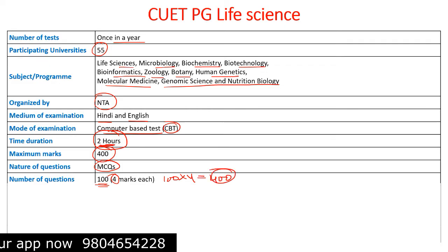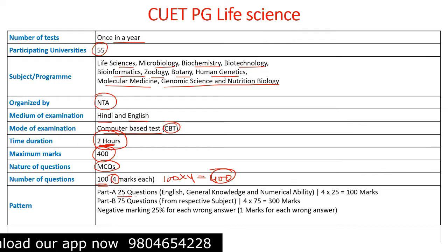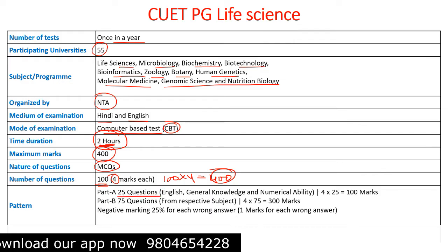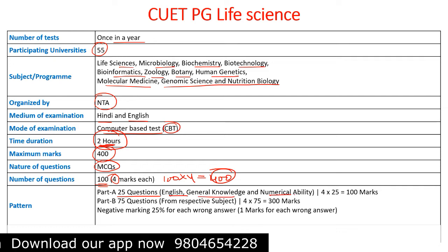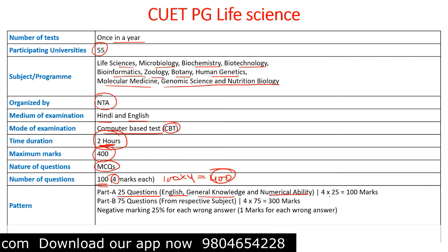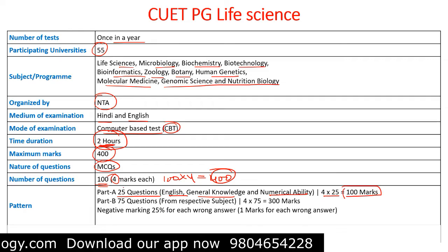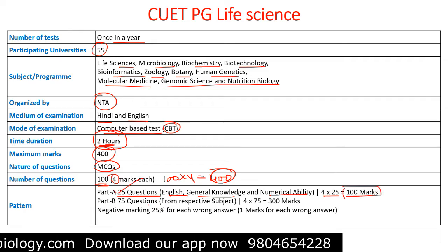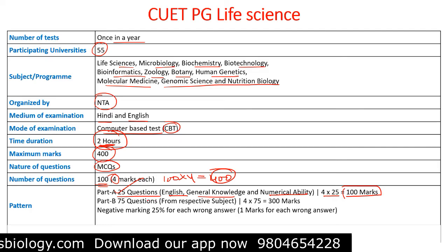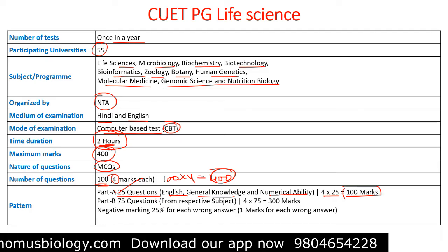Regarding the question pattern: Part A has 25 questions and is compulsory. It covers English, general knowledge, and numerical abilities. Each question carries 4 marks, making Part A worth 100 marks in total. Part B is from the respective subject — in this case, life science.